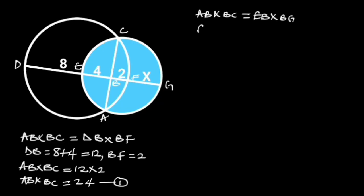EB is equal to 4. BG is equal to 2 plus x.